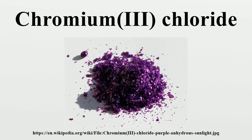It consists of the cation trans-[CrCl2(H2O)4]+, plus additional molecules of water and a chloride anion in the lattice. Two other hydrates are known: pale green [CrCl(H2O)5]Cl2·H2O and violet [Cr(H2O)6]Cl3. Similar behavior occurs with other chromium compounds.